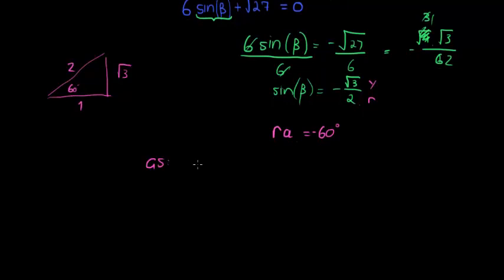So now I've got my two solutions, my general solution is then either equal to beta is equal to my reference angle plus 360 times k, or beta is equal to 180 degrees minus my reference angle plus 360 times k.